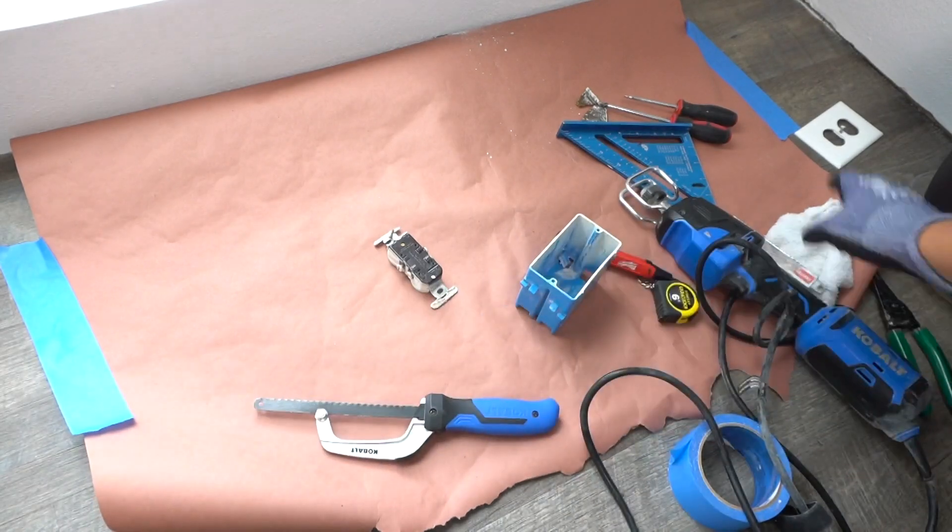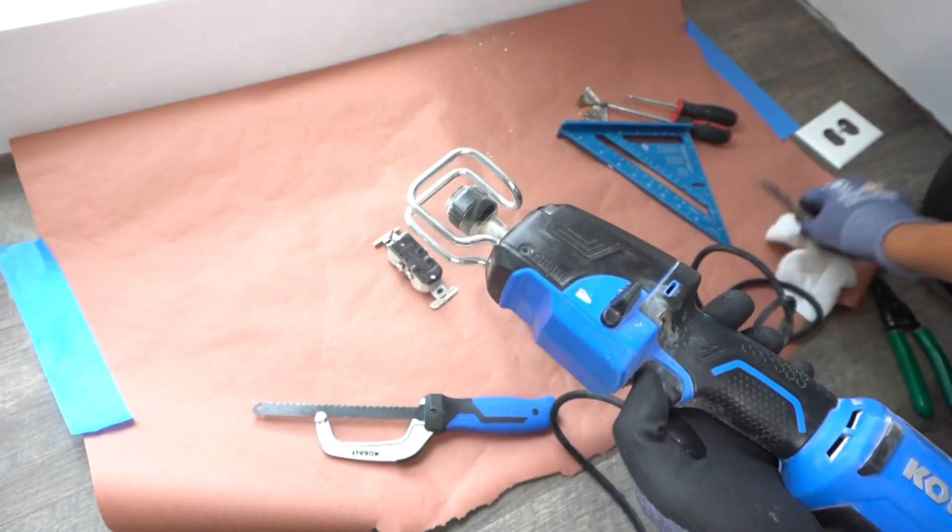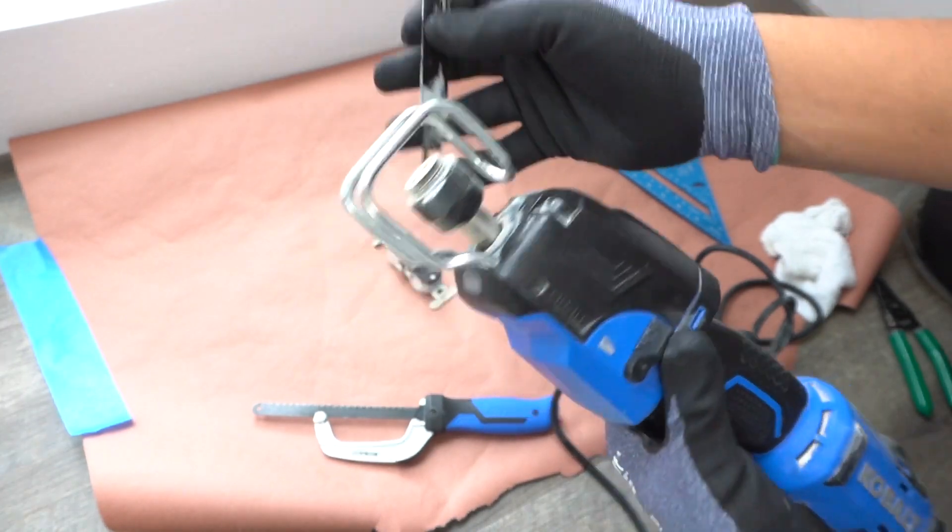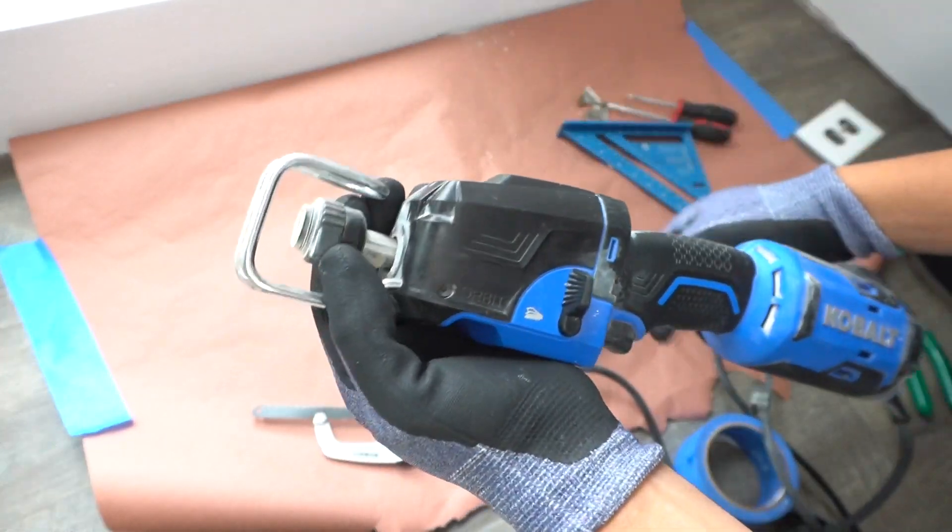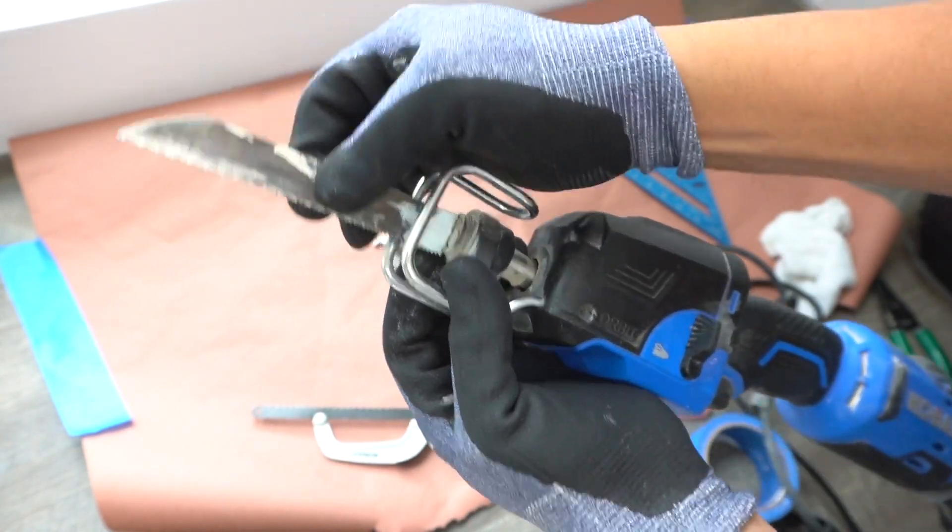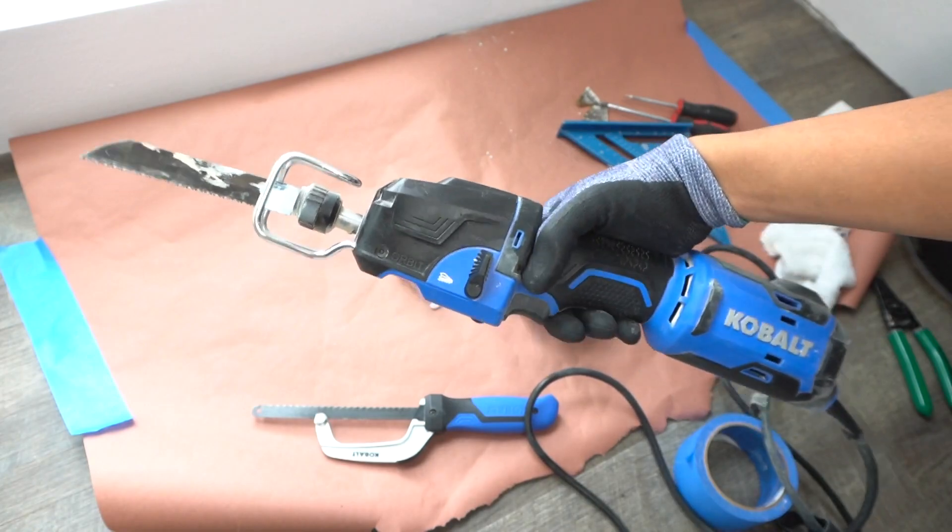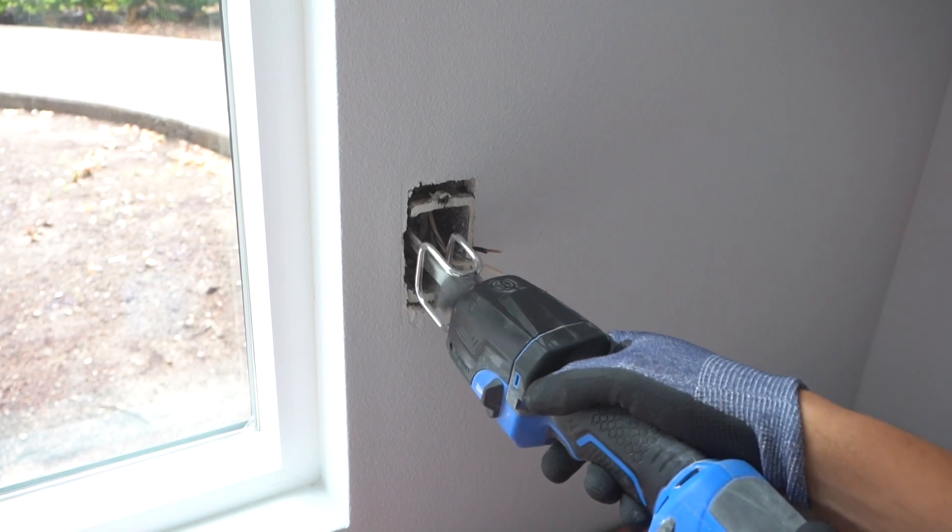But instead of tiring yourself out with this handheld hacksaw, thank goodness I have available my handheld sawzall. Now this, you can have these bits where you can pretty much install for wood or you can use it for metal, and I'll leave this in the description down below if you're interested. Again, this is my go-to every time I do these types of work. Again, just be very careful. Make sure there is no electrical power. Make sure to turn off the power from your breaker and just pretty much go to town and it slices like butter.